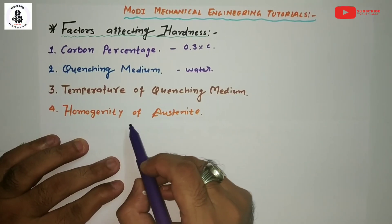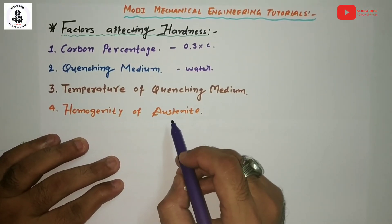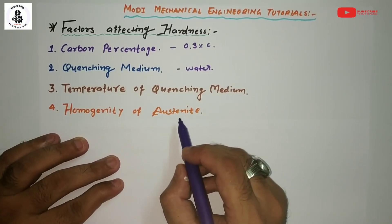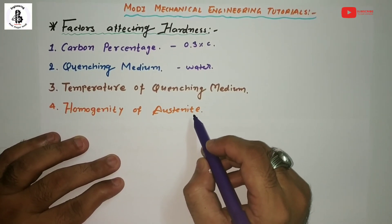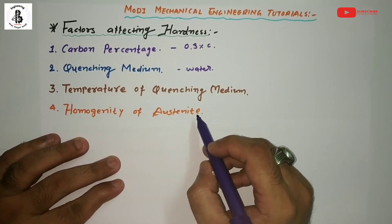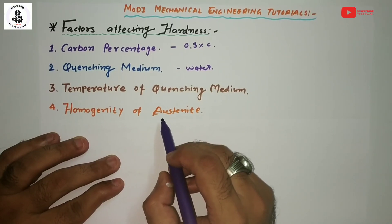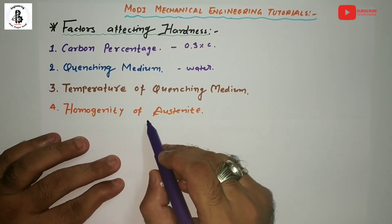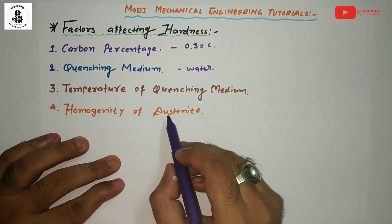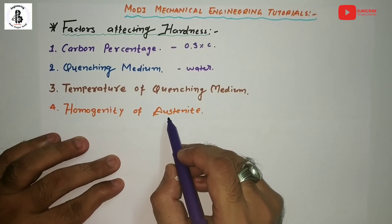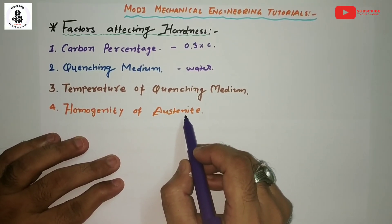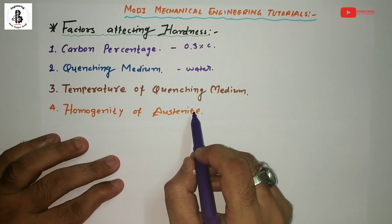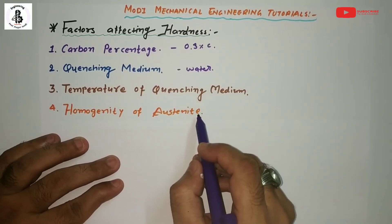Fourth important factor: homogeneity of the austenite. Generally, for making a hard structure in steels or for performing any heat treatment process, you heat the material into the austenitizing temperature range. If good homogeneity is achieved at that austenitizing temperature, then higher homogeneity of austenite results in more uniformity in hardness throughout the steel. You will get a better microstructure at room temperature after quenching, giving good hardness in the steel structure.